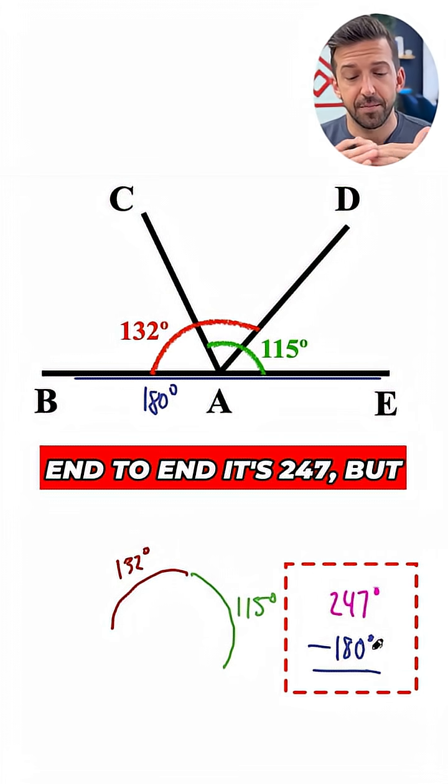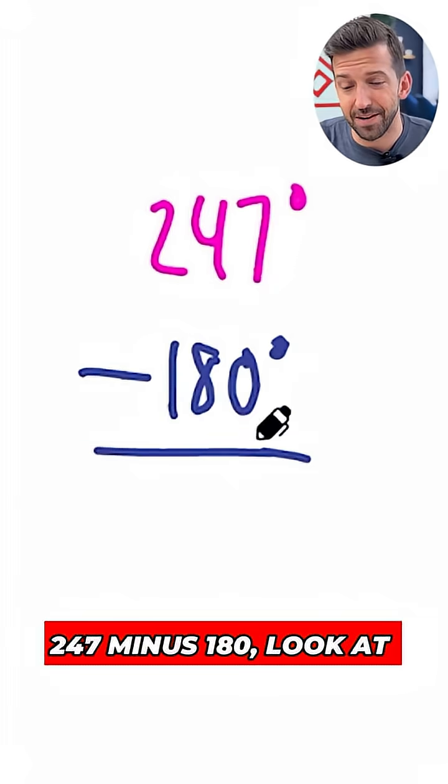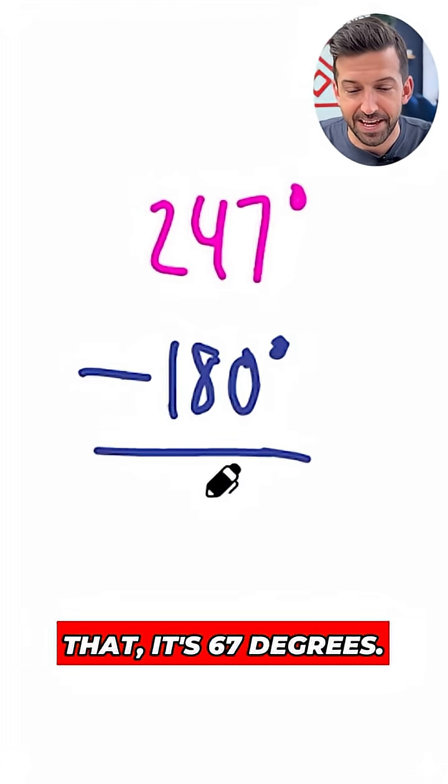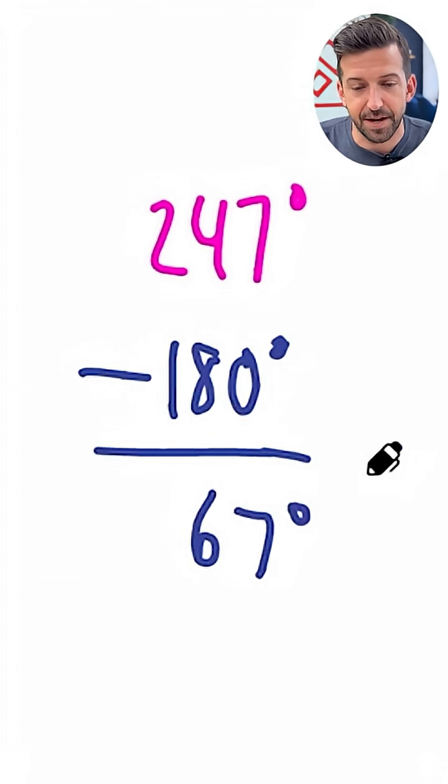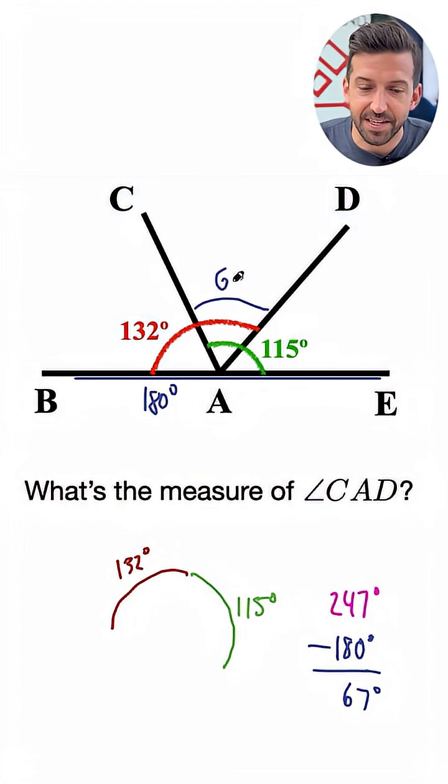End to end, it's 247, but they overlap by some amount to fit into that 180 degrees. 247 minus 180, look at that. It's 67. 67 degrees is the amount they overlap. And so that means angle CAD here is 67 degrees.